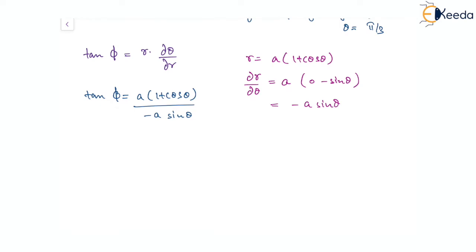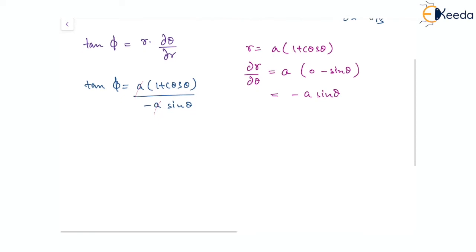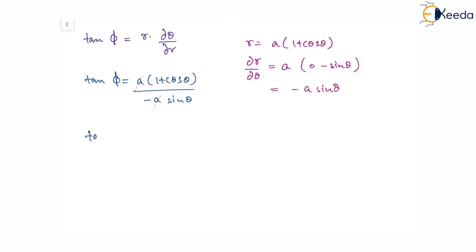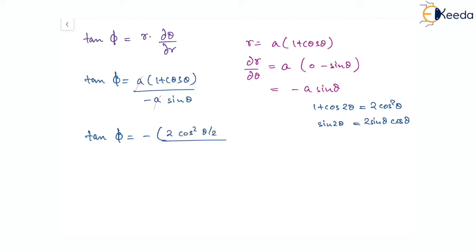The 'a' cancels, giving minus of 1 plus cos theta over sine theta. Now, 1 plus cos theta can be written as 2 cos squared theta by 2, and sin theta can be written as 2 sin theta by 2 times cos theta by 2. Taking common factors, tan phi simplifies to minus cot theta by 2.